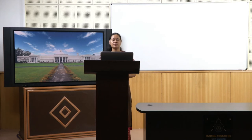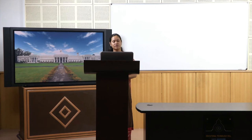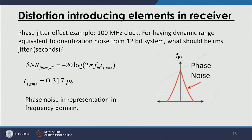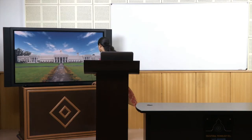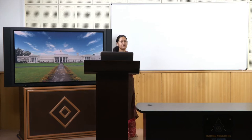In this series on basics of software defined radios and practical applications, we have been discussing distortion parameters. We have been discussing the effect of phase jitter at the output. We were discussing one example where we have a clock frequency of 100 MHz and we wanted to know what the jitter in seconds should be for having a dynamic range equivalent to the quantization noise of a 12-bit system. We will first calculate the SNR due to quantization noise.